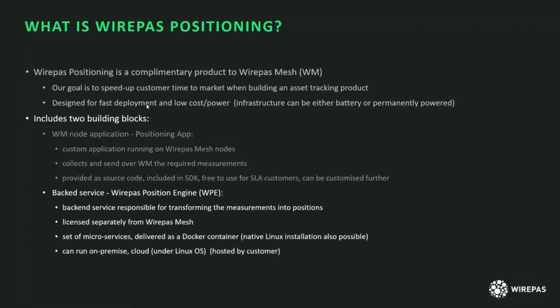The second building block is the backend service, which is the Wirepass Positioning Engine. This service is responsible for transforming the measurements provided by the tags into positions. This service is licensed separately from the Wirepass mesh, and it is a set of microservices delivered as a Docker container, though a native Linux installation is also possible.